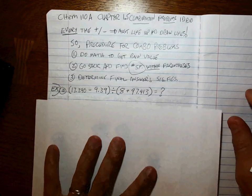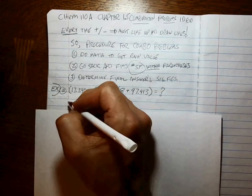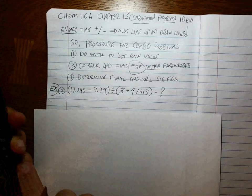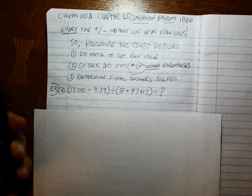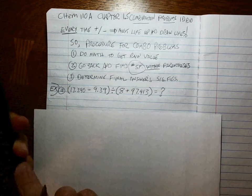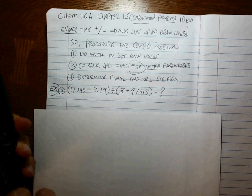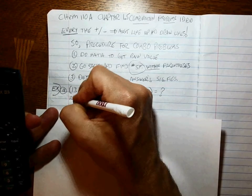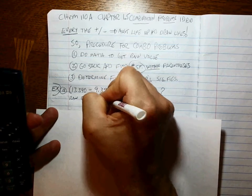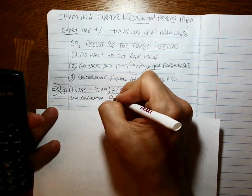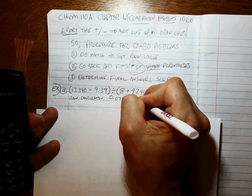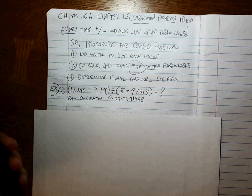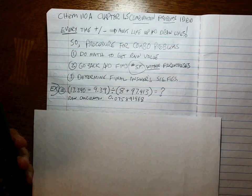Because that's not how we have to do this. The first thing to do is punch into your calculator and get the raw value. Make sure that you know how to do this in your calculator correctly. 17.39 minus 9.39 equals, divide it by parentheses, 8 plus 97.413. Close parentheses. Equals. This is what my calculator says. 0.075891968. Hopefully, that's what your calculator says, too.